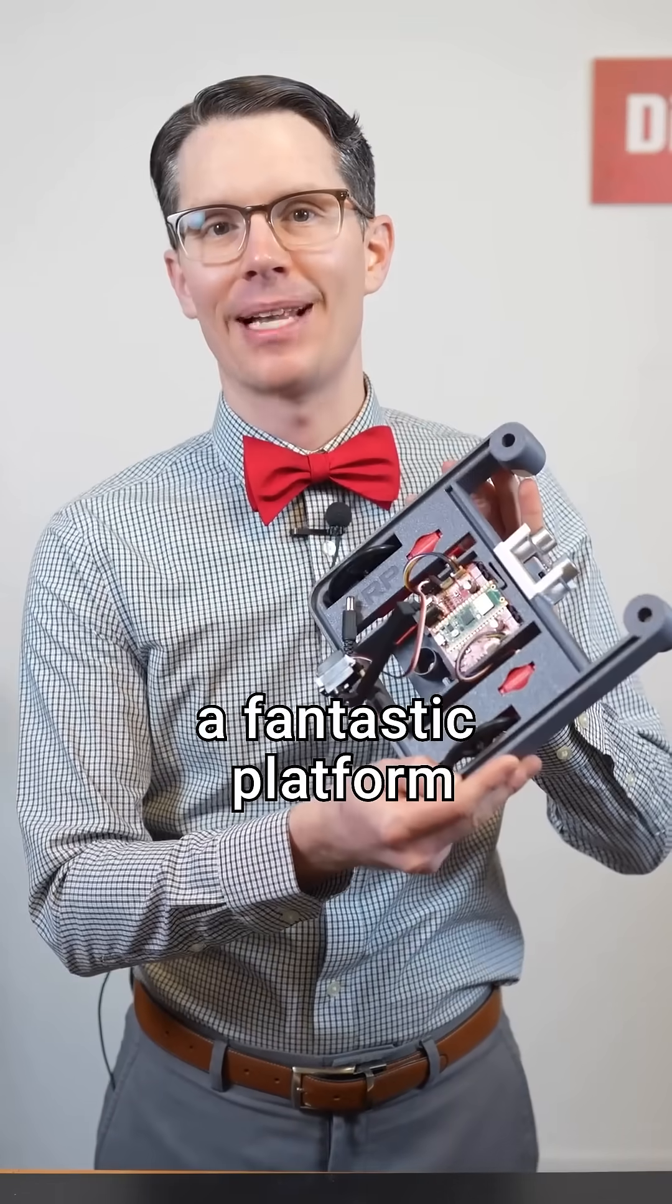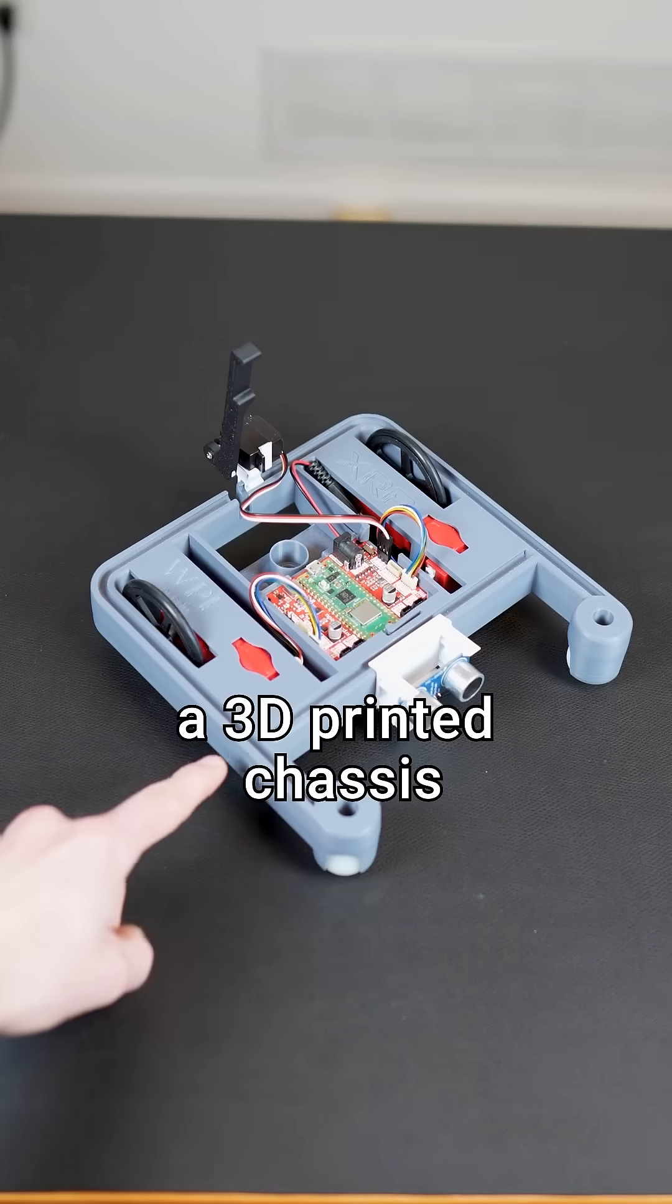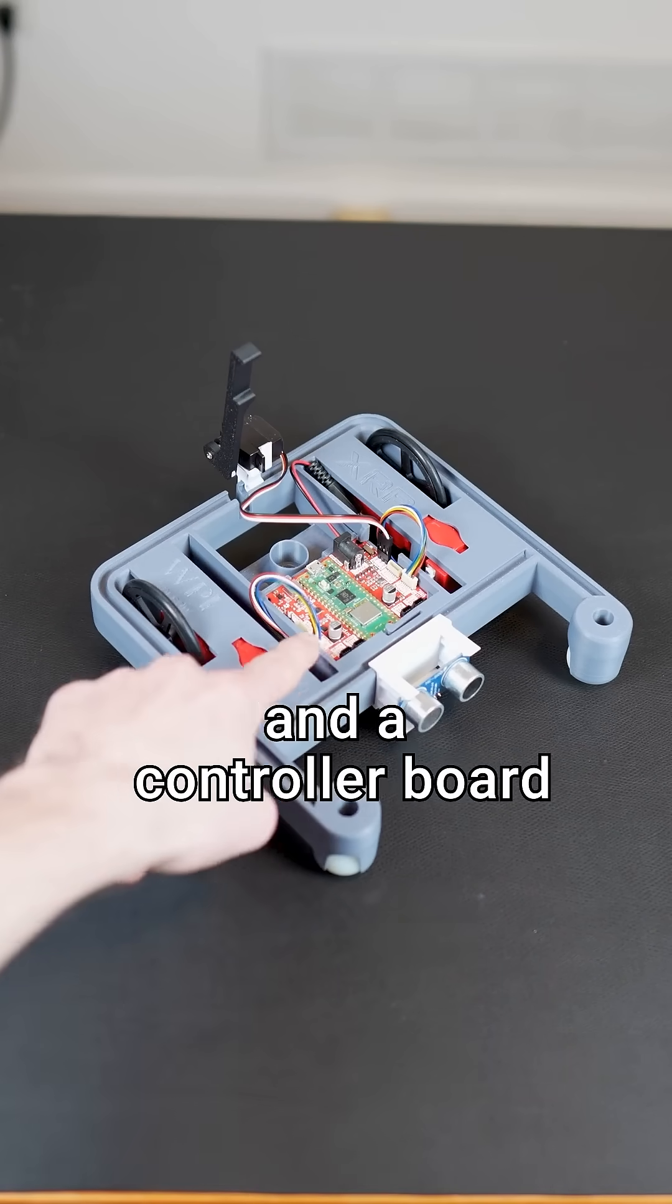The XRP is a fantastic platform for jumping into robotics. The kit includes a 3D-printed chassis, motors, wheels, casters, manipulator arm, sensors, and a controller board.